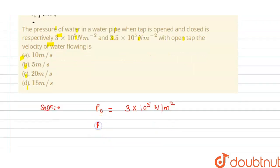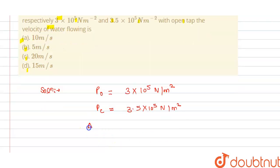And pressure when tap is closed, P_closed is 3.5 × 10^5 N/m².